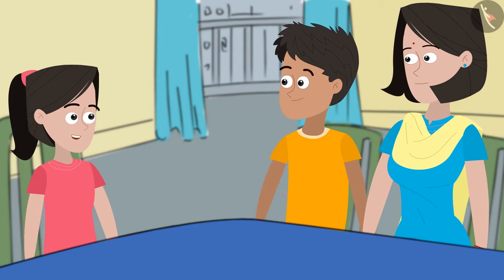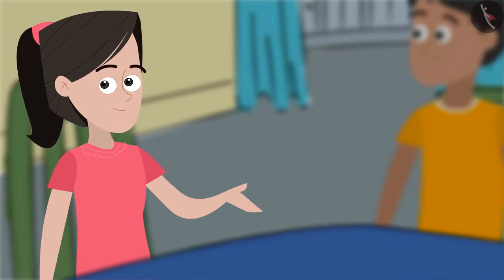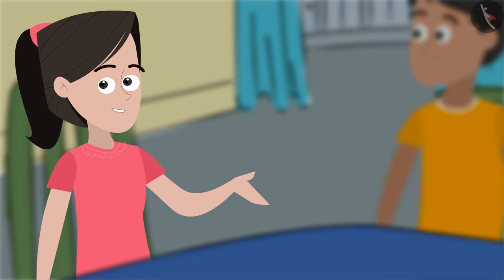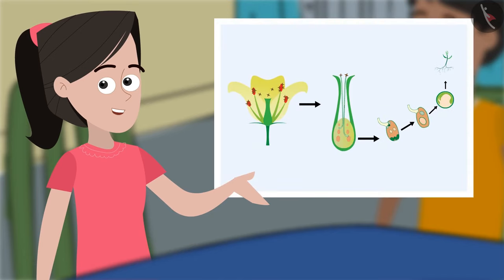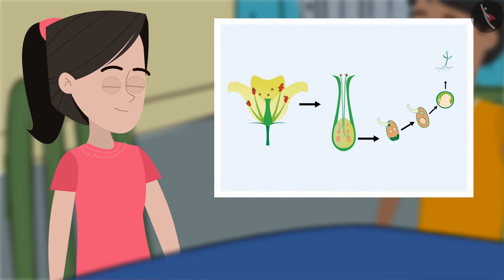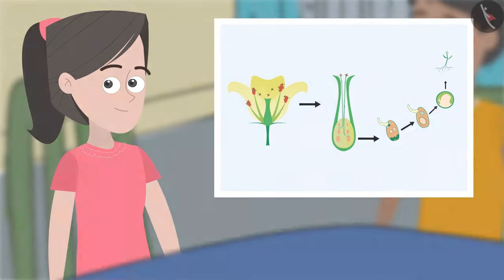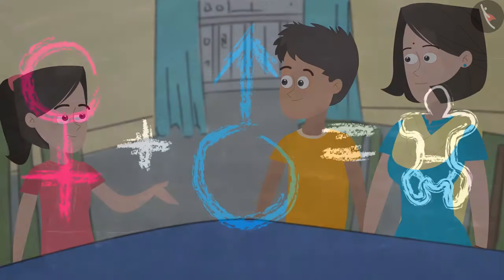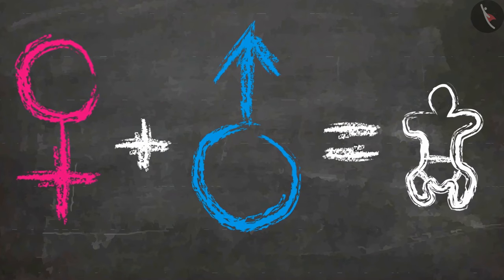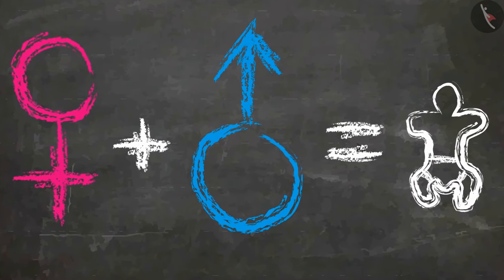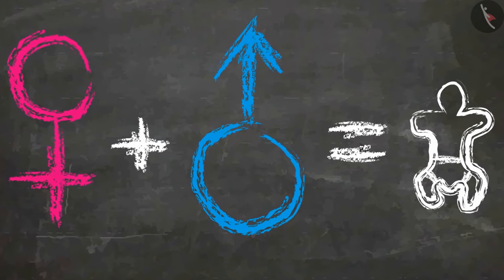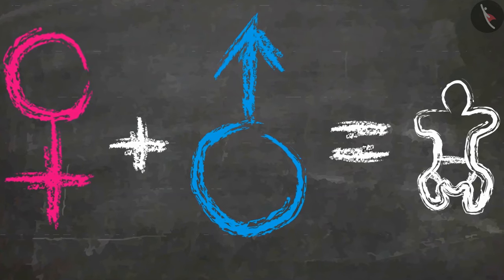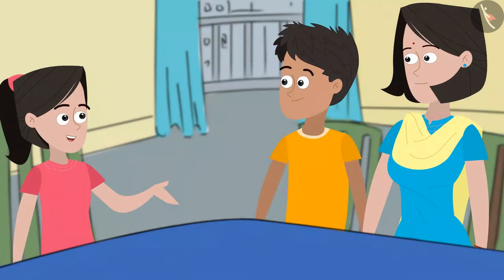Is it? I am curious to know how. Friends, do you remember how reproduction takes place in plants? Can you list out the parts of a plant that play a role in the same? Mummy, I remember that plants have male and female parts that play a role in sexual reproduction. Do animals have male and female parts too that are useful in the process of reproduction?